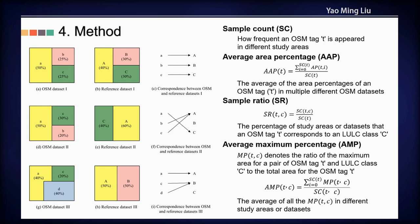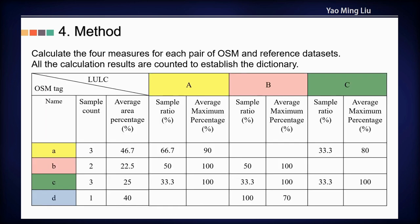The fourth measure is average maximum percentage. Maximum percentage denotes the ratio of the maximum intersecting area for a pair of OSM tag and reference class to the total area for that OSM tag. We calculate the four measures for each pair of OSM and land use land cover class, and all the calculation results are combined to establish the dictionary.